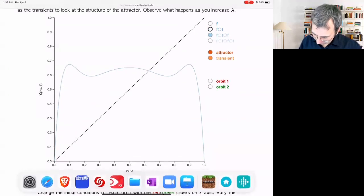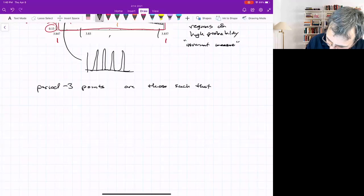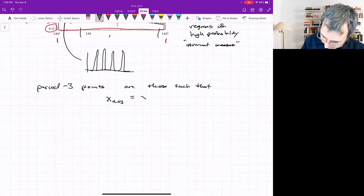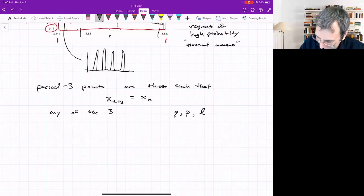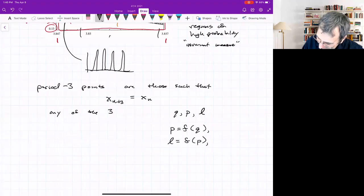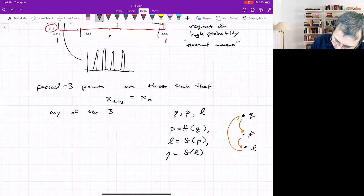If we have a period three point, period three points are those such that X_{n+3} equals X_n. But you could also see them as any of the three and maybe we'll call them Q, P, L. So we'd say P is F of Q and L is F of P and Q is F of L. So you could see it's going between these three points. I don't know if it's going exactly in this order. But P is the iterate, L is the iterate of P and then Q is the iterate of L. But you could also view any of them, any of the three are fixed points of three iterates of F.